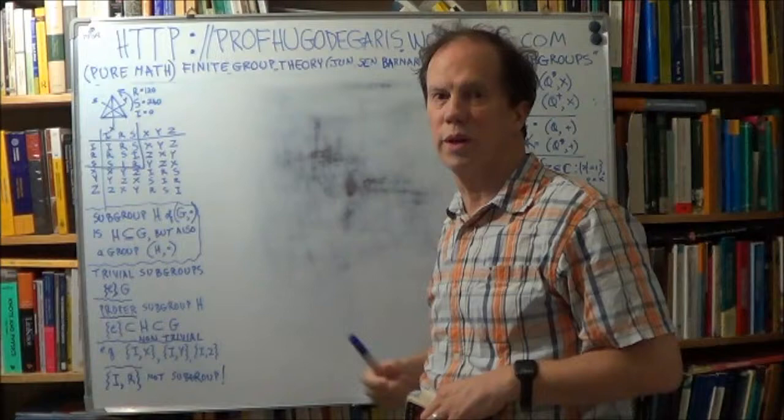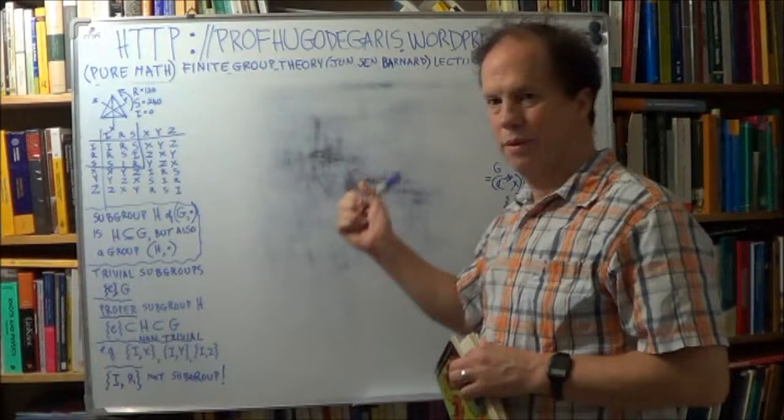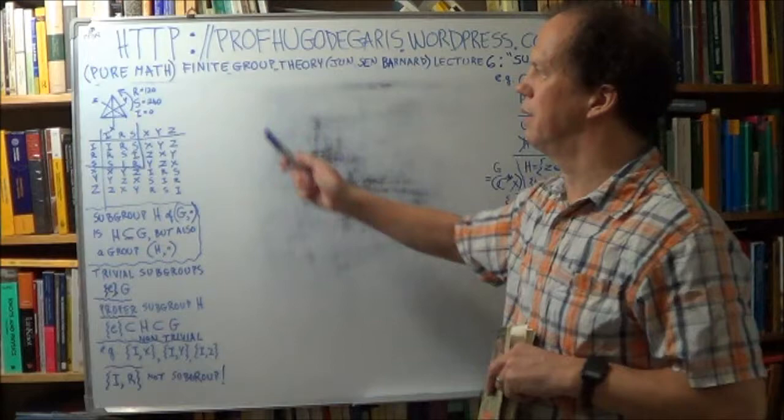The previous lecture was on groups, a rather long one with many parts. This one will be quite a bit shorter, the number of pages in chapter six. So the lecture number and the chapter number match is about half of what the previous lecture, the previous chapter was about. So it should be a bit shorter, so a bit of relief.